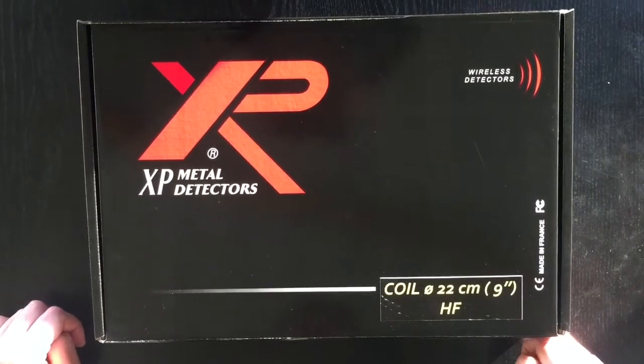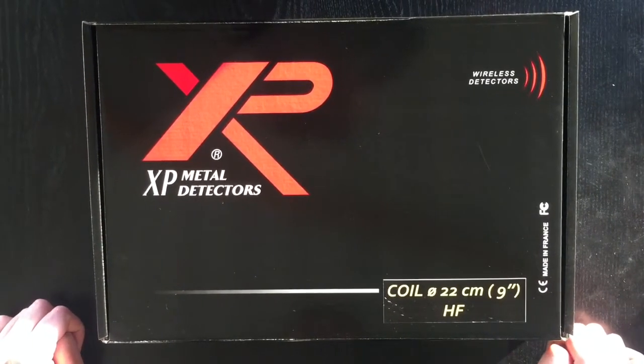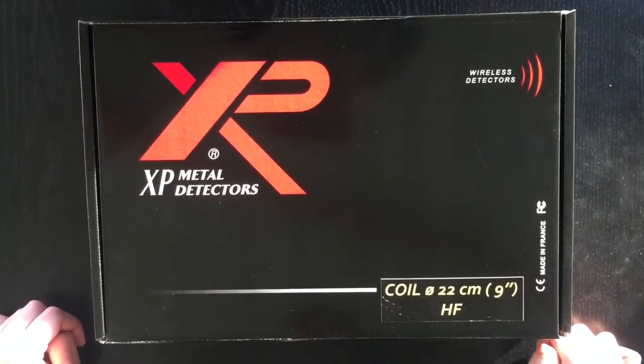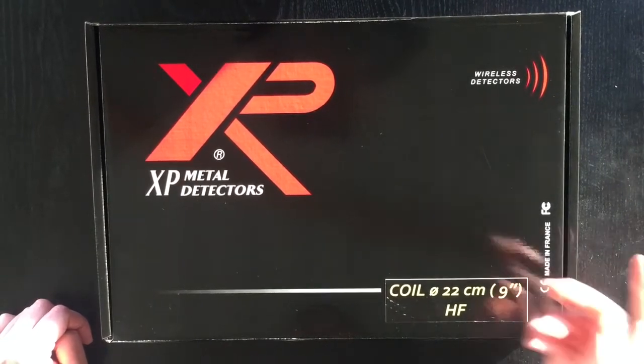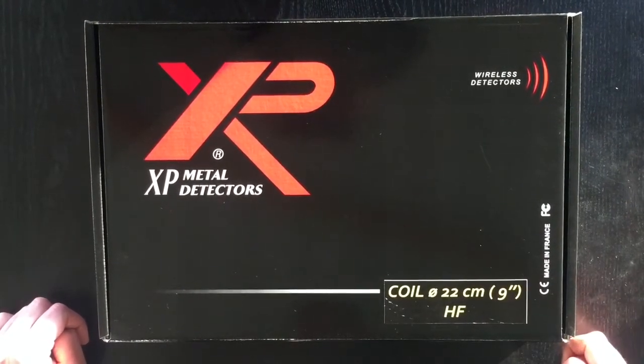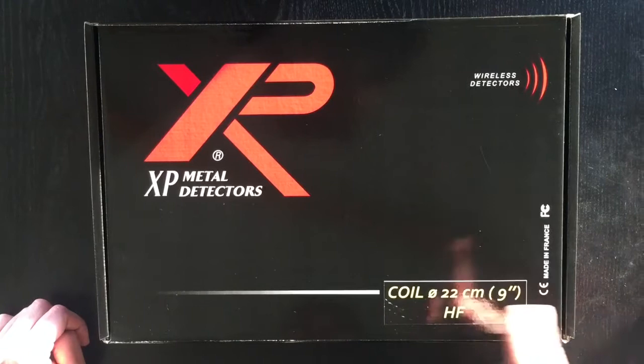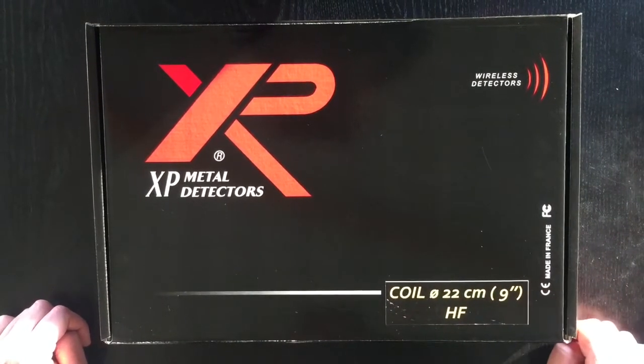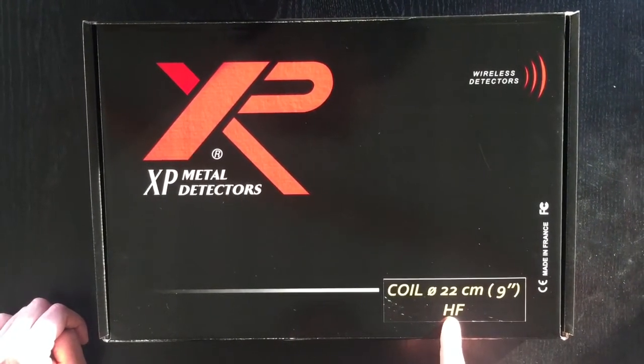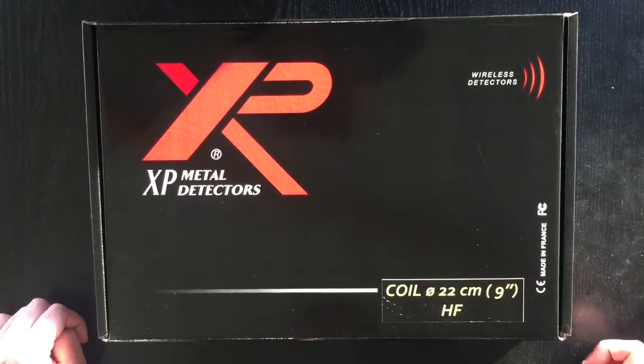This is the packaging of the new XP high-frequency 22cm coil. In appearance, there is no change. We find the same box as the traditional and current XP. The only thing that changes is this yellow sticker, which tells us that we are on the high-frequency series of the XP.